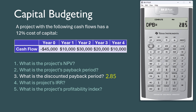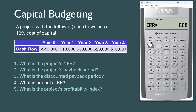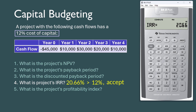To find the project's IRR, or internal rate of return, press the IRR button, then press Compute. We see here that the IRR of 20.66% is higher than the 12% cost of capital, indicating they should accept the project.